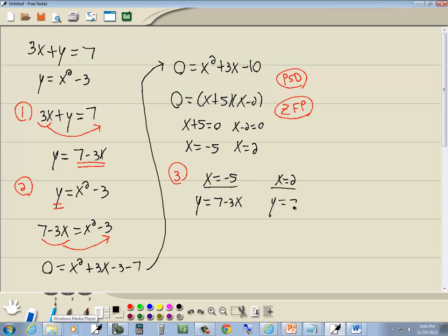So y is equal to 7 minus 3x. So we have y is equal to 7 minus 3 times negative 5. And y is equal to 7 minus 3 times 2. Well, negative 3 times negative 5 is 15. So we've got y is equal to 22. And this one. 7 minus 3 times 2 is 6. So we've got y is equal to 1.